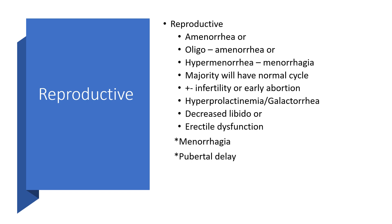Hyperprolactinemia or galactorrhea — that alone can send negative feedback to the hypothalamic-pituitary-ovarian axis, and with that there will be anovulation if at all there is any. It is either amenorrhea or anovulation and then infertility.